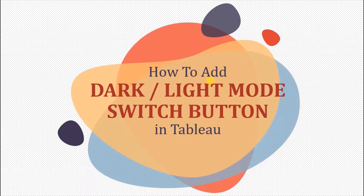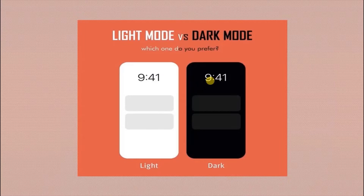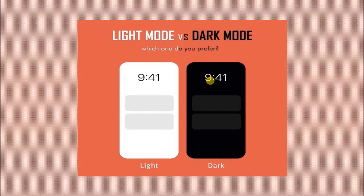In today's session, we will see how to add a dark or light mode switch button in Tableau. Nowadays, we can switch between dark and light mode on our phones, and many apps also provide this functionality. Similar to that, we will create a dashboard that will provide users the functionality to switch between dark and light mode.